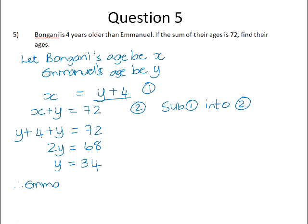So therefore Emmanuel is 34. And we were told that Bongani is 4 years older. So that means Bongani is 38 years old.